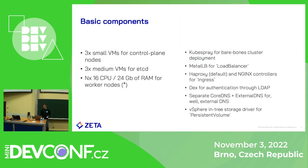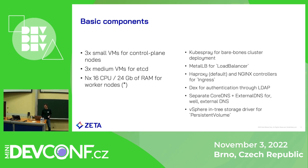Let's talk about our cluster layout and basic components we're using. It's nothing special and follows usual deployment models. We have three VMware VMs for control plane nodes, then three nodes for etcd, and countless worker nodes to run the workloads. We don't schedule workloads on control plane or etcd nodes so that if something happens to a workload it doesn't kill our cluster or our etcd deployment.